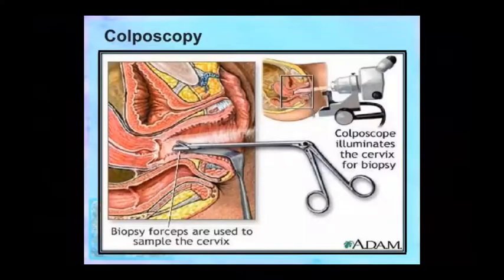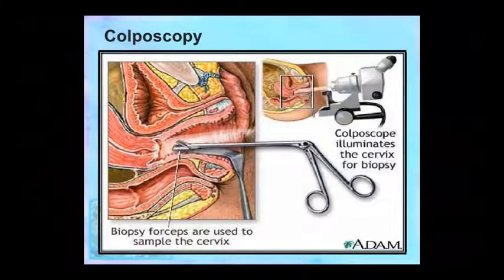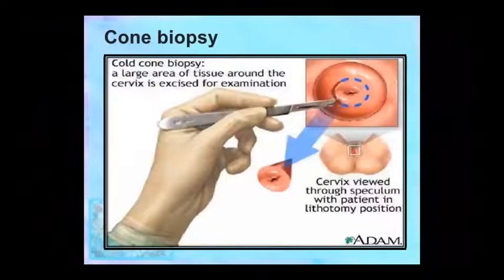A colposcope is used to illuminate the cervix for biopsy — we take a tissue sample using forceps and then examine the cervix. Another procedure is cone biopsy, also called cold cone biopsy.